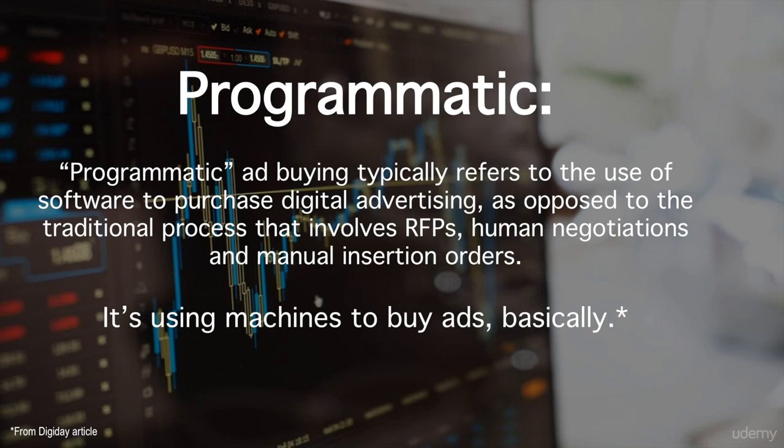So programmatic — let's define it. Programmatic ad buying typically refers to the use of software to purchase digital advertising, as opposed to the traditional process which involves an RFP, negotiation, and a manual insertion order. So that means you're using machines to buy ads instead of doing a manual place-and-buy, one-to-one type of deal or negotiation.